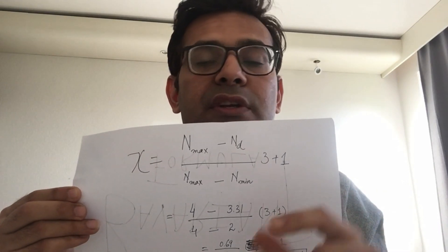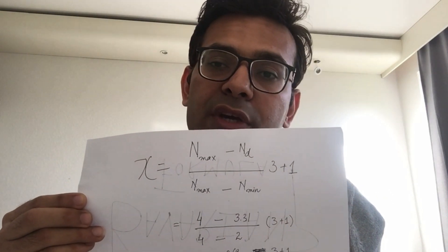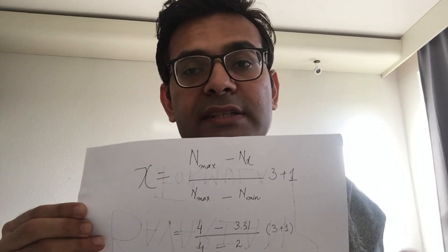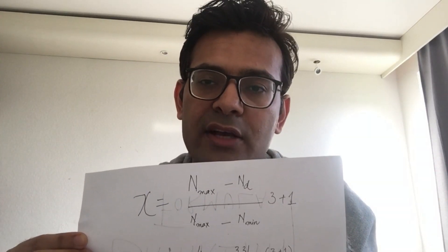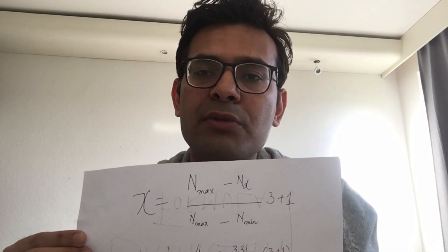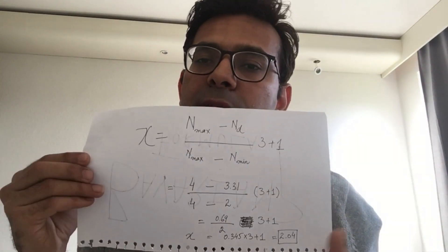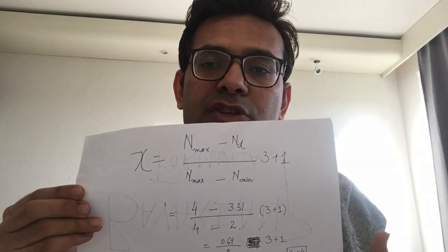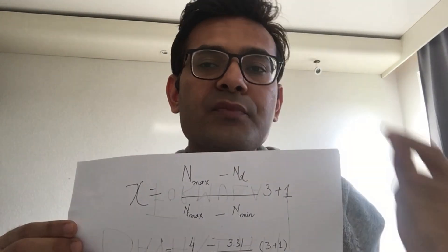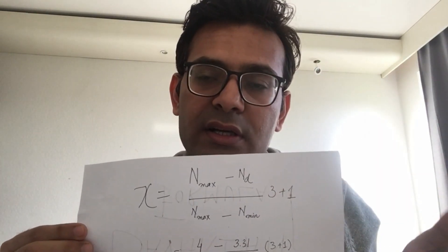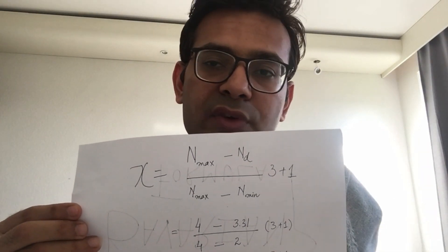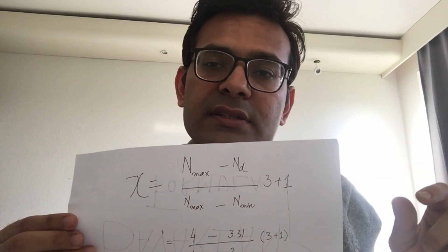Afterwards, you add 1, giving 2.035. This follows the DEMAS rule — divide and multiply before addition and subtraction — which everyone learns in around fourth or fifth standard. Applying this, the total comes to 2.035, which rounds to 2.04. So by using this formula, you can yourself convert your grades into German grades.